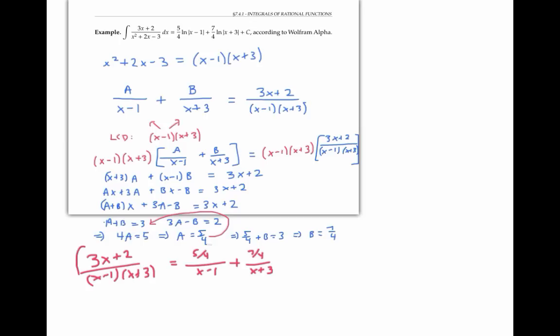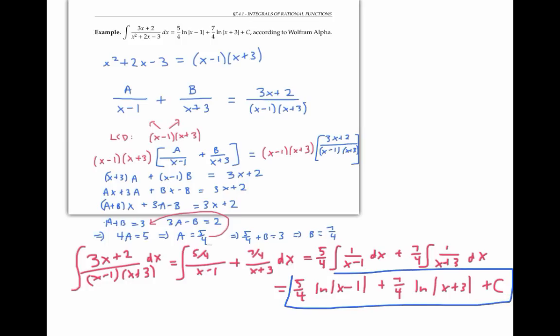Now to calculate the integral of my original expression, I can calculate the integral of my partial fractions instead. I'm going to split up my integrals here. Now the integral of one over x minus one is natural log of absolute value of x minus one. You can check this by taking the derivative, or you can do a simple u-substitution where u is x minus one to compute this integral. Similarly, the integral of one over x plus three is natural log of absolute value of x plus three. This completes the computation of the integral using the method of partial fractions.